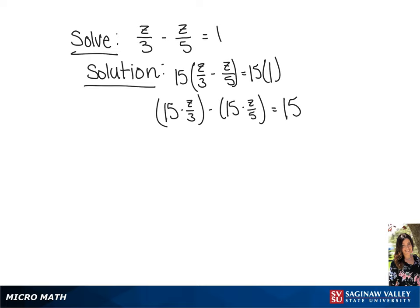If we multiply this through, this will give us 5z minus 3z equals 15. 5z minus 3z equals 2z equals 15. Divide each side by 2, giving us the solution of z equals 15 over 2.